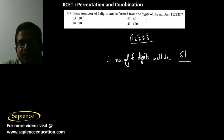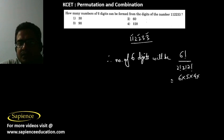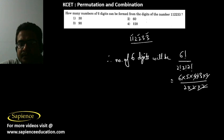The answer is 6! divided by (2! × 2! × 2!), which equals 6×5×4×3×2×1 divided by 2×2×2 = 720 divided by 8 = 90. The answer is option 3, which is 90.